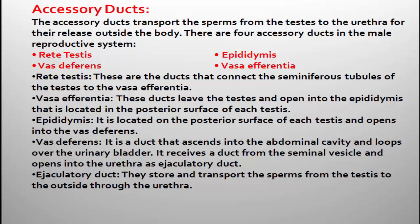Vas deferens is the duct that ascends into the abdominal cavity and loops over the urinary bladder. It receives a duct from the seminal vesicle and opens into the urethra as the ejaculatory duct. So vas deferens ascends into the abdominal cavity, forms a loop over the urinary bladder, joins with the duct from the seminal vesicle, and finally opens into the urethra as the ejaculatory duct.